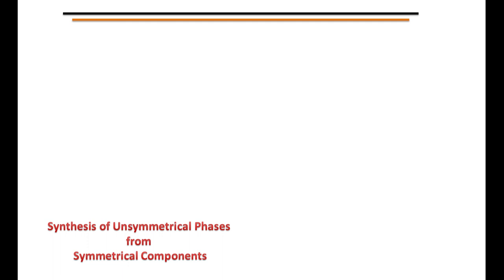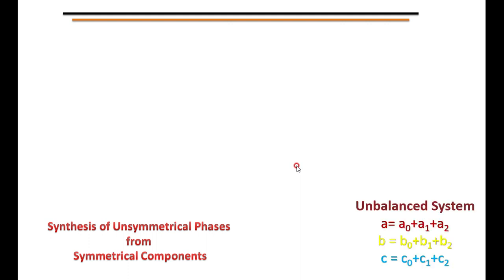The synthesis of unsymmetrical phasors from symmetrical components — how we extract balanced phasors from unbalanced phasors. Taking a, b, c as unbalanced phasors, their sequence components are: for a — a0, a1, a2; for b — b0, b1, b2; for c — c0, c1, c2, representing zero, positive, and negative sequence components respectively.